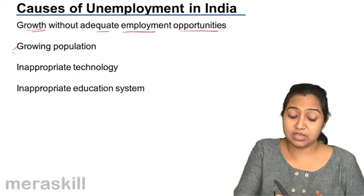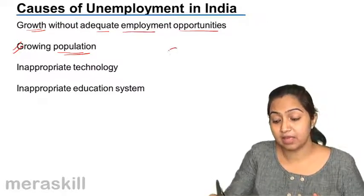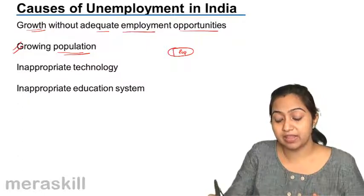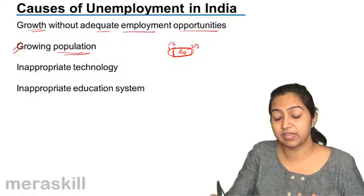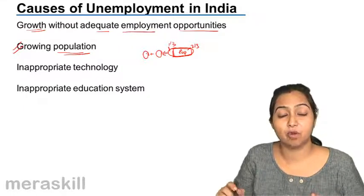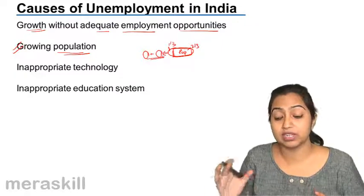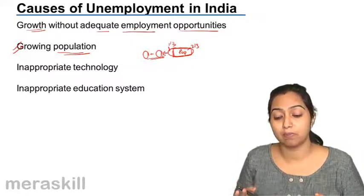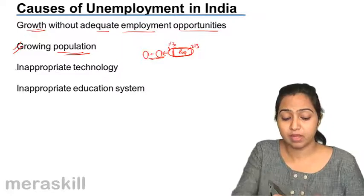Still, they have not been able to provide adequate employment opportunities, mainly because the population has grown so tremendously. If they provide opportunities to nearly two-thirds of the population, one-third is still left. Every year, as the workforce keeps increasing, it becomes difficult for the government to provide employment to the added population, and the problem keeps magnifying. Due to population growth, unemployment has multiplied over the years.